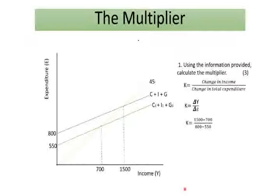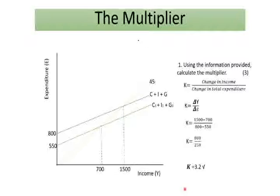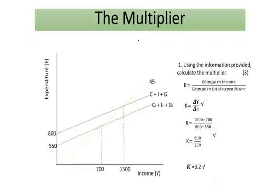What is $1,500 minus $700, and what is $800 minus $550? We get $800 divided by $250, which gives us $3.2. That is our answer. You get one mark for the formula, one mark for substitution, and one mark for your final answer.